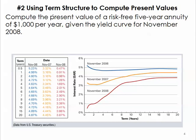This question asks us to find the present value of a risk-free five-year annuity that pays a thousand dollars per year, given the yield curve for November 2008.